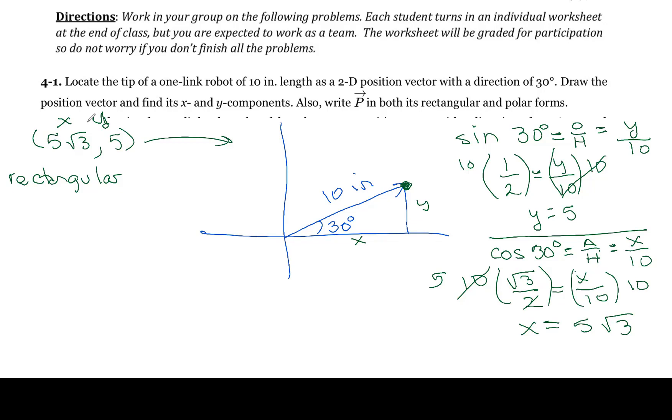I can say vector p is equal to 5 times the square root of 3i plus 5j. And that would be its rectangular form.